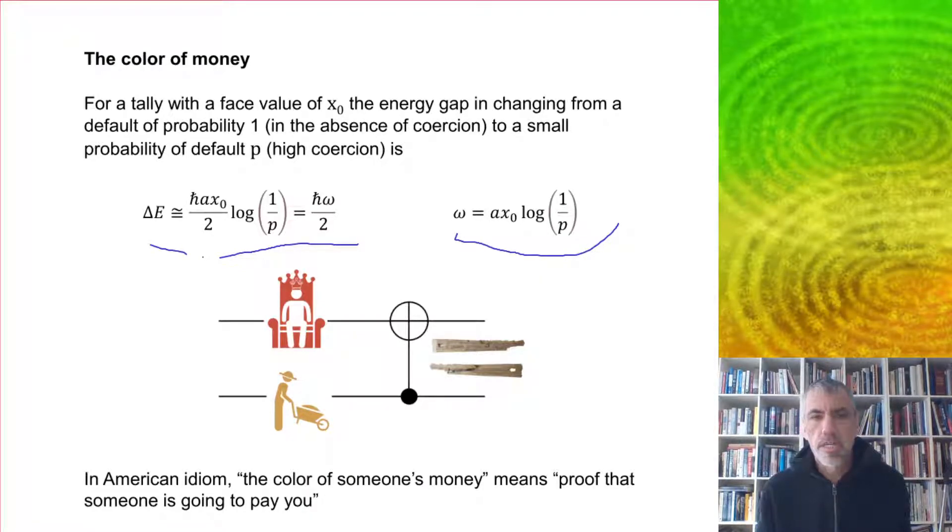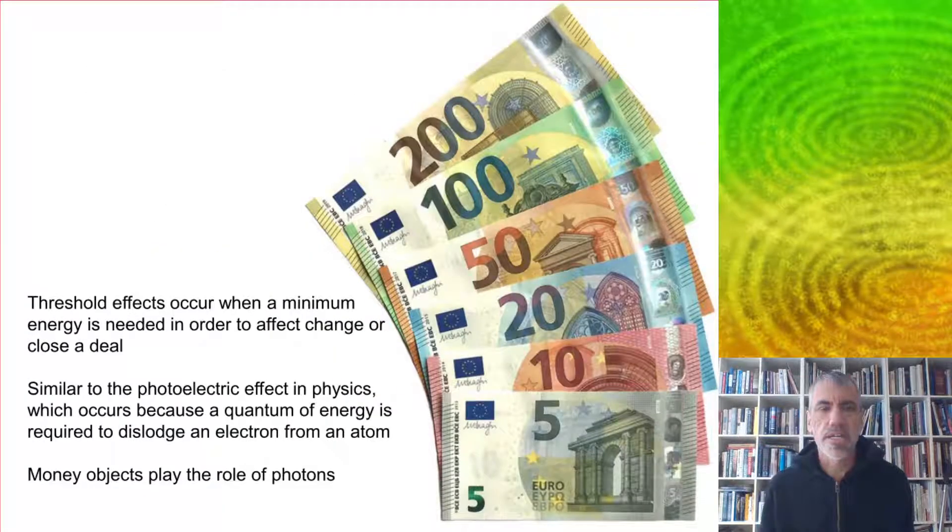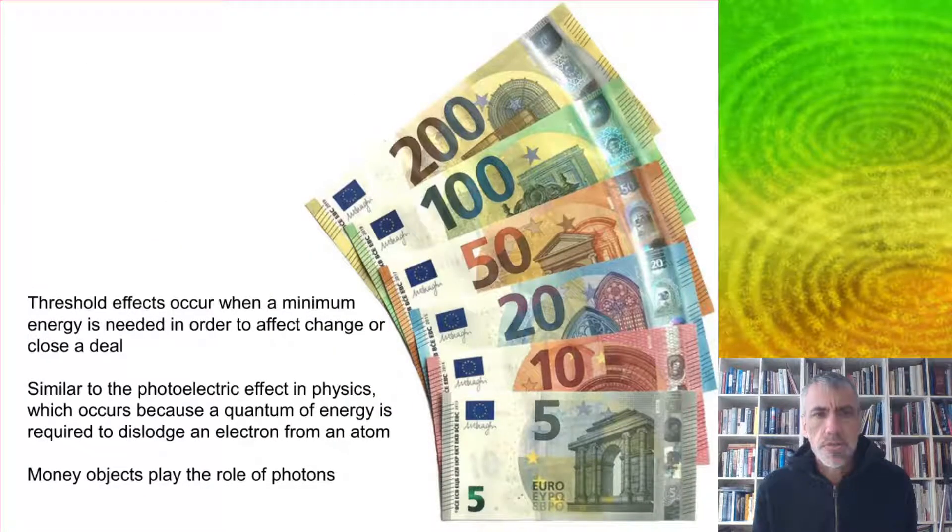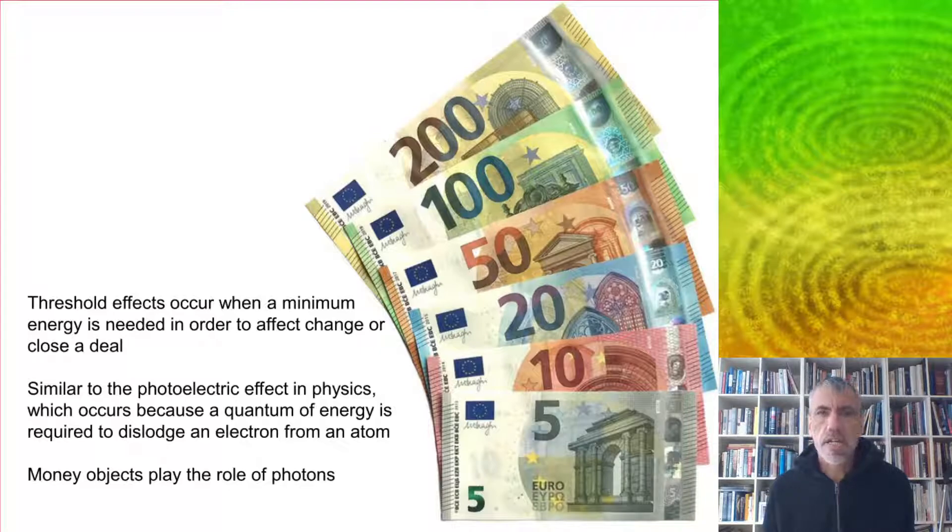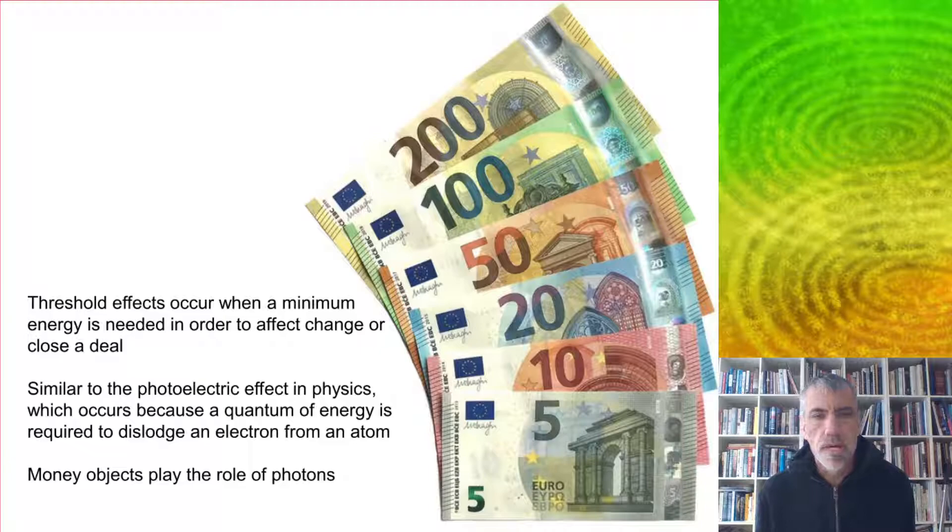This is a frequency which in physics is associated with color. In American idiom, the color of someone's money means proof that someone is going to pay you, so the quantum interpretation gives another angle on that. In general, these threshold effects occur when a minimum energy is needed to affect change, close a deal, make a transaction happen, or get a lodger out of their house.